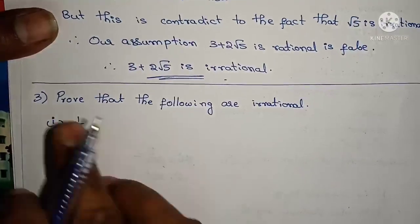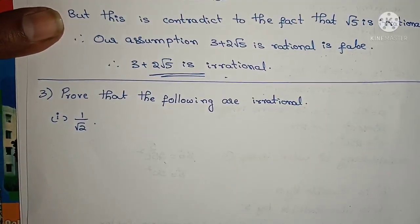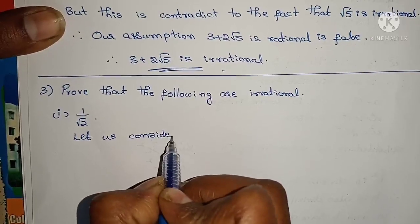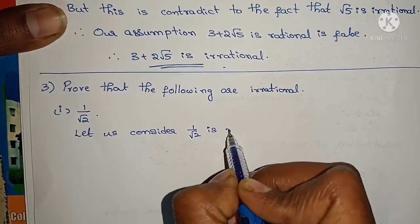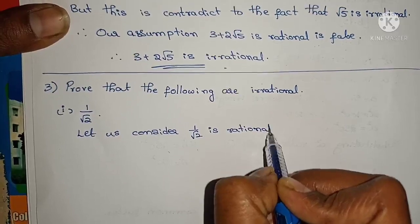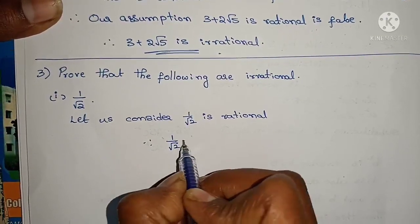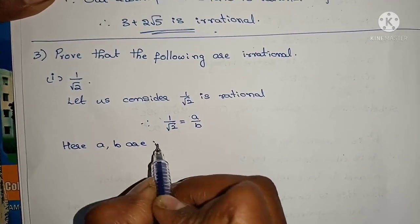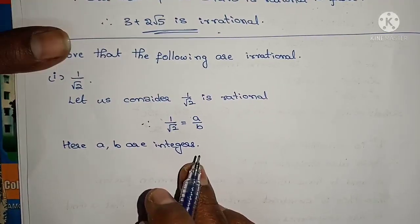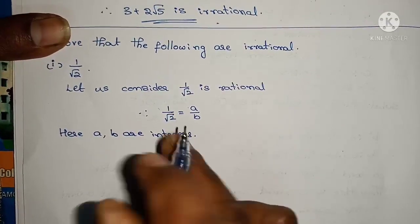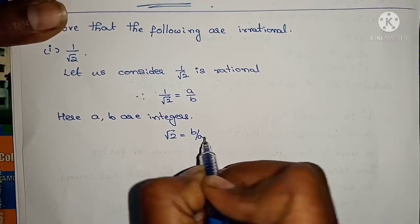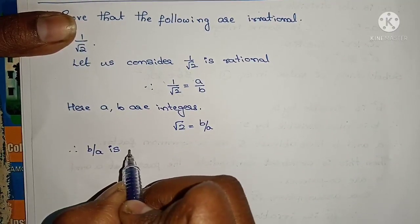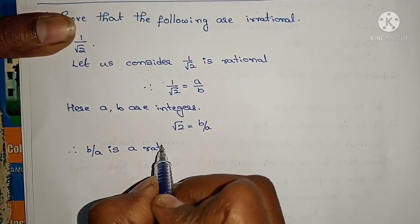Next problem: prove that 1/√2 is irrational. Same process. Let us assume that 1/√2 is rational. Therefore 1/√2 = a/b, where a and b are integers. Then root 2 equals b by a. Since a and b are integers, b by a is a rational number.